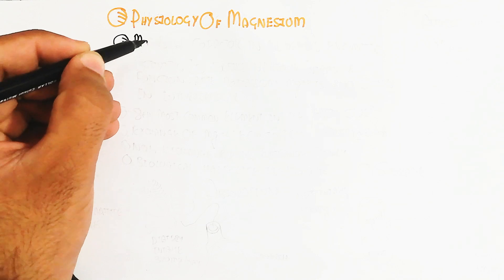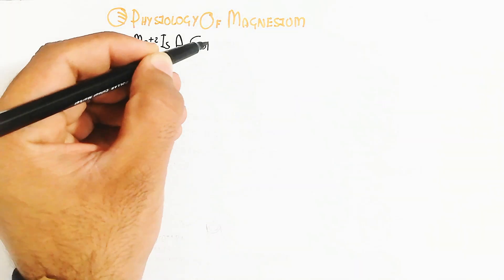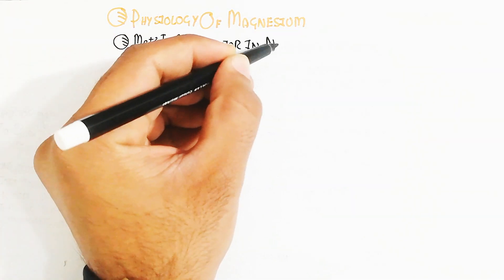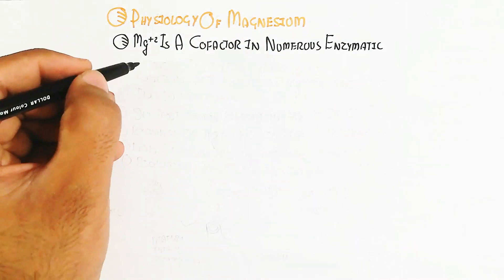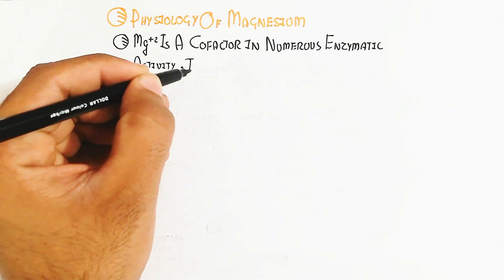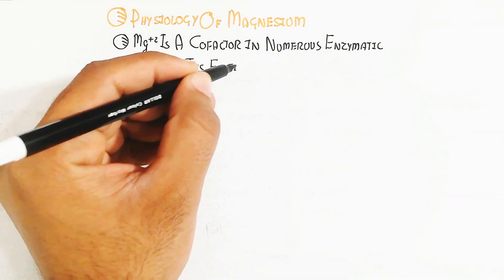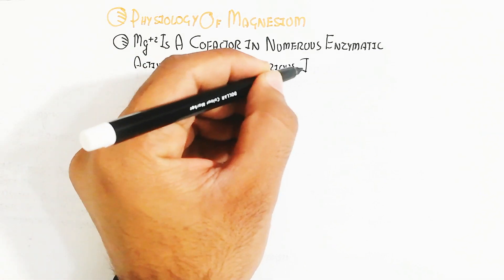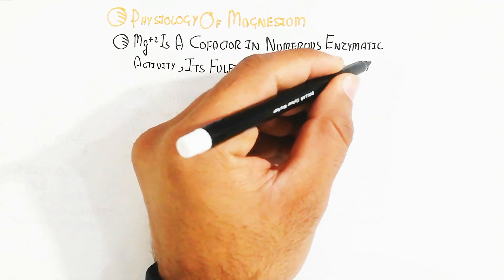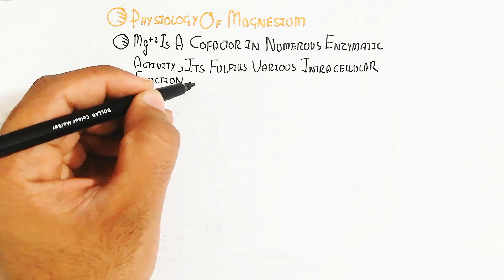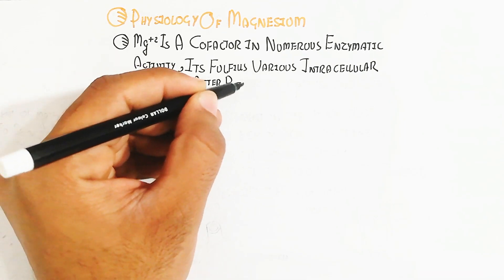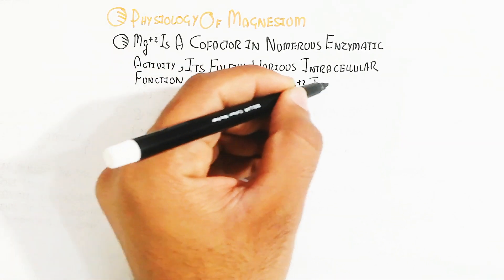Magnesium is an intracellular cation. After potassium, magnesium is the second most abundant cation in the intracellular space, not extracellular, but intracellular.